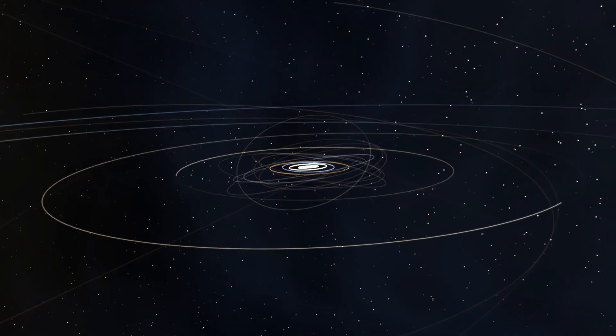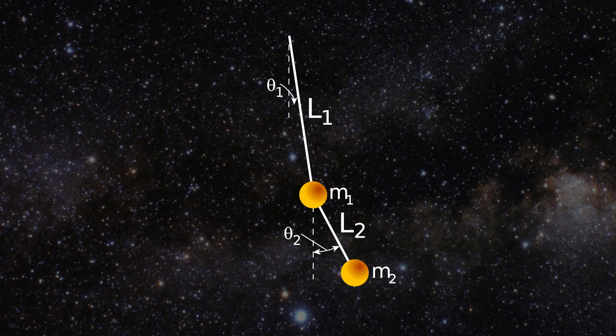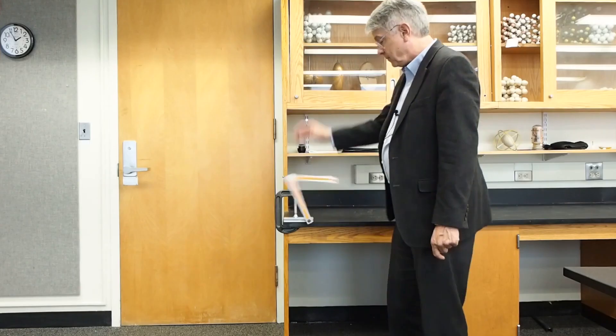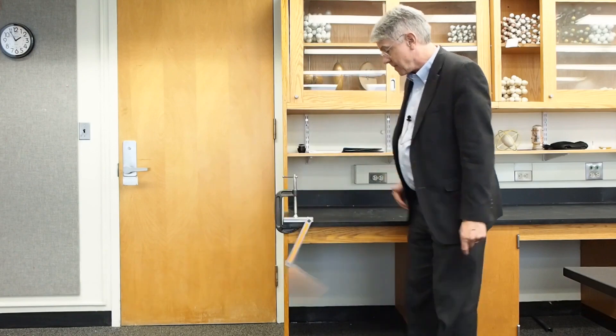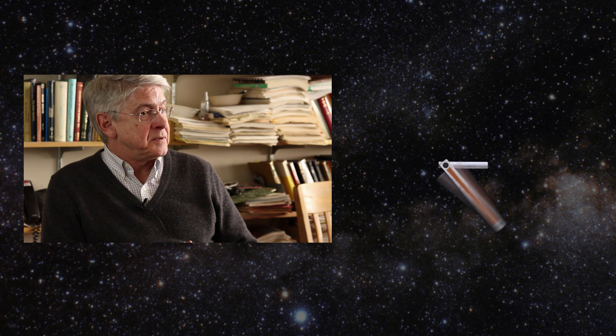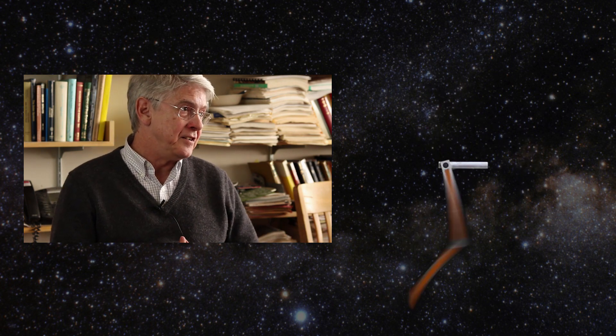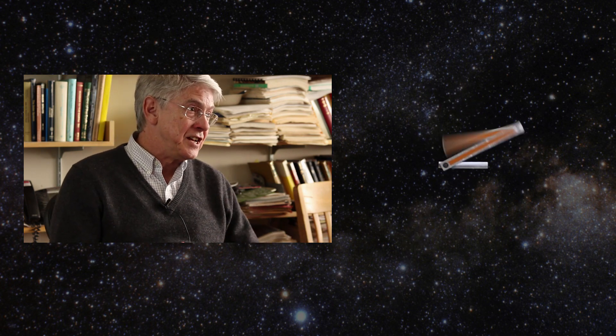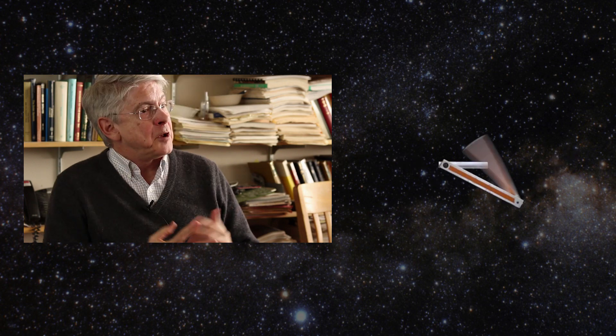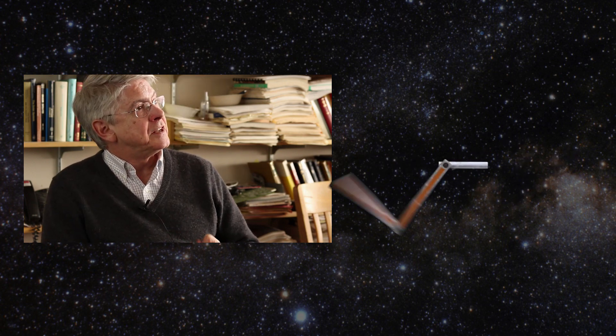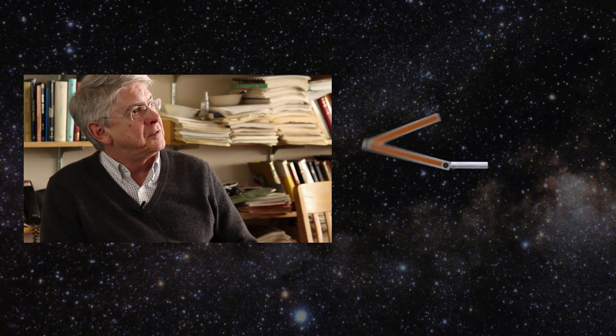I used to give many lectures on the chaotic behavior of the solar system. I had read about the double pendulum mathematically — it's a very intriguing illustration of chaotic behavior — so I asked my class if anyone would be interested in building one, and Jayan Sharma said yes. I then went around the country showing it, and people never tire of watching the double pendulum.